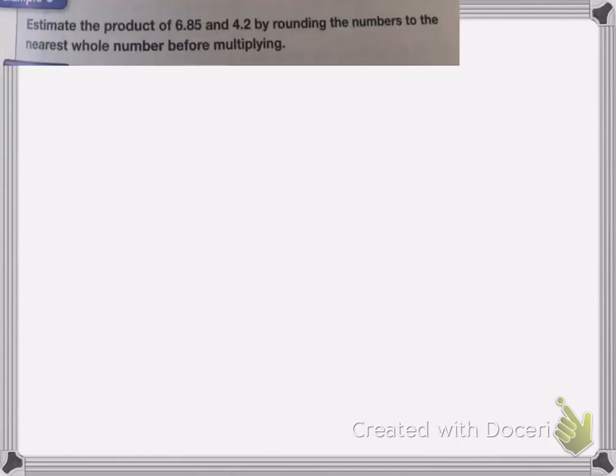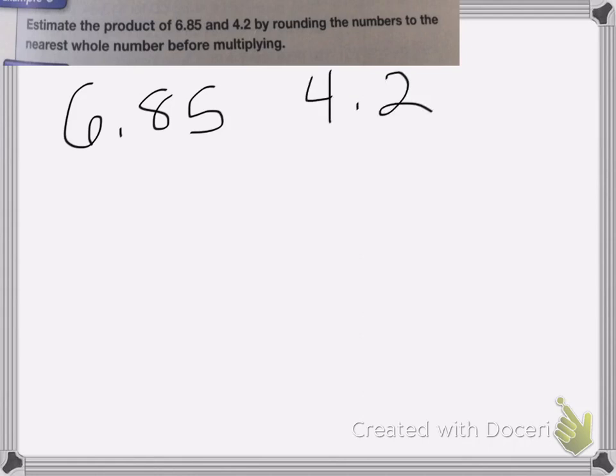Here we have: estimate the product of 6.85 and 4.2 by rounding the numbers to the nearest whole number before multiplying. So I want to round these two numbers — I have 6.85 and 4.2 — and I round them to the nearest whole number.